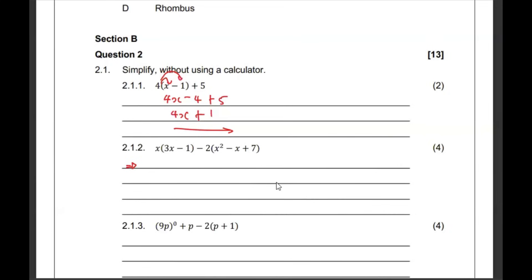And then 2.1.2, we have this and that. It's going to be 3x squared. This and that is minus x, minus 2x squared, plus x, say 2x, because it's this one multiplied by that. The negative 2 and the 7, we get a negative 14. Let me collect the like terms. Minus 2x squared, minus x plus 2x minus 14. That gives me x squared, plus x minus 14.